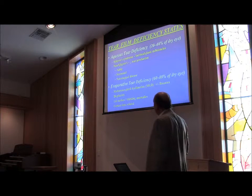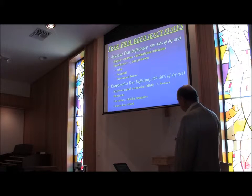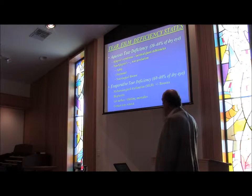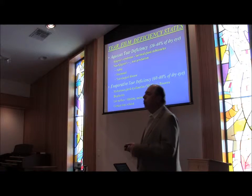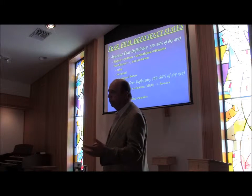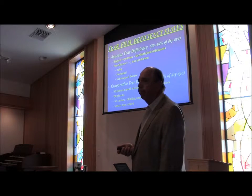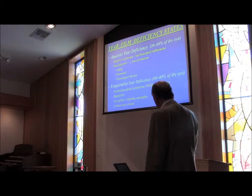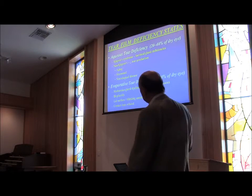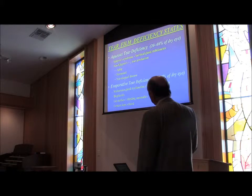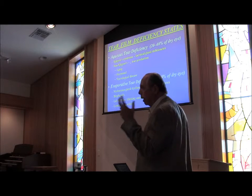Aqueous tear deficiency — where you don't produce enough of the liquid part of your tear — accounts for maybe around 25% of dry eye cases. Evaporative tear deficiency is probably 75% of dry eye problems, with a little mixture between the two. Aqueous decreased production could be due to aging, hormonal factors, or loss of nerve supply to the eye.